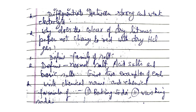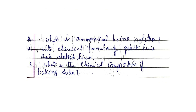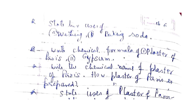Define the family of salts: normal salt, acid salt, and basic salt — give two examples of each. Write the chemical name and formula of baking soda and washing soda. What is ammoniacal brine solution? Write the chemical formula of quick lime and slaked lime. What is the chemical composition of baking soda? State the two uses each of washing soda and baking soda.